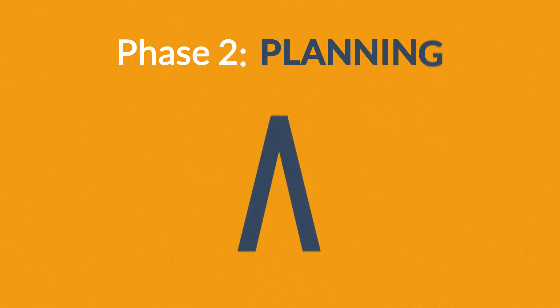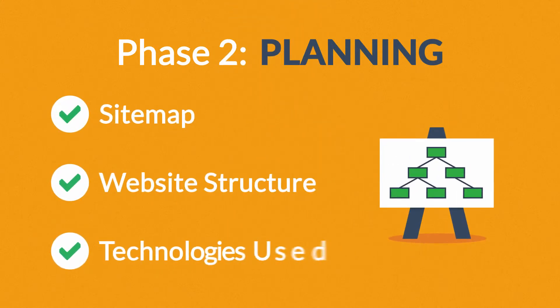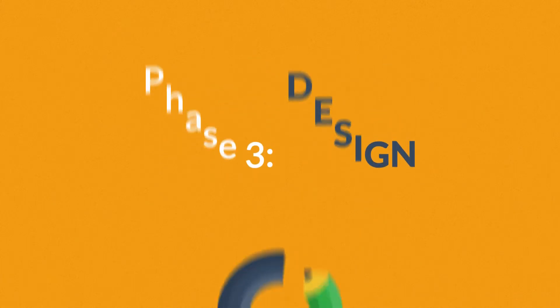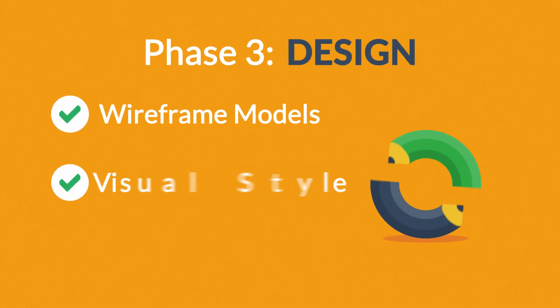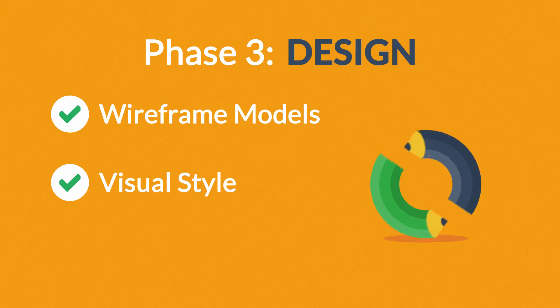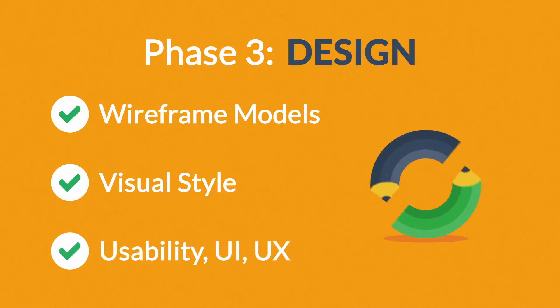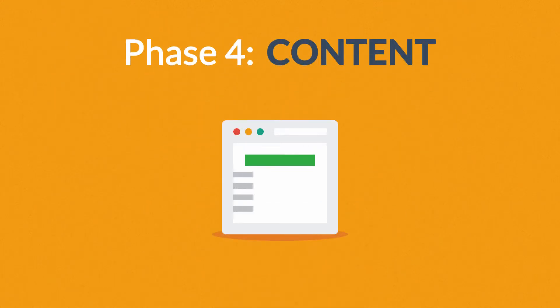Phase 2 — Planning: a plan includes a definition of the site map structure and technologies that we're about to use. Phase 3 — Design: not only do we focus on wireframe models and the visual style in this stage, but also on the usability of the user interface for the best possible user experience.